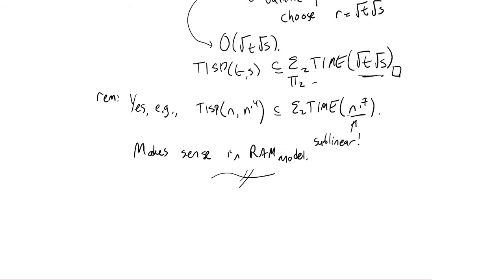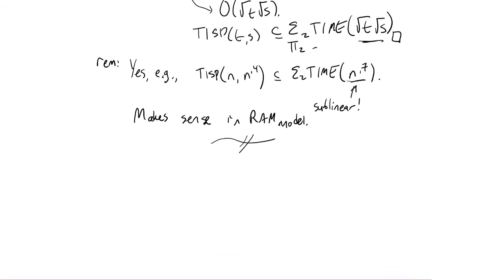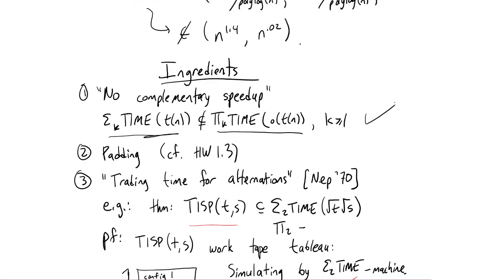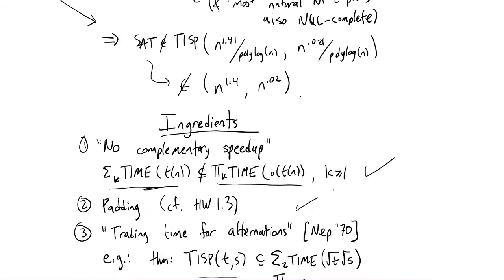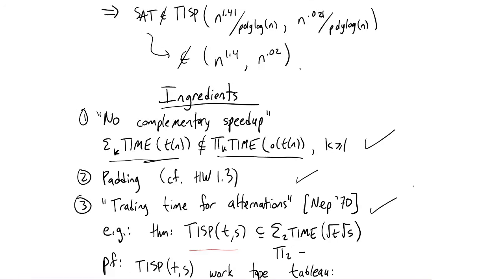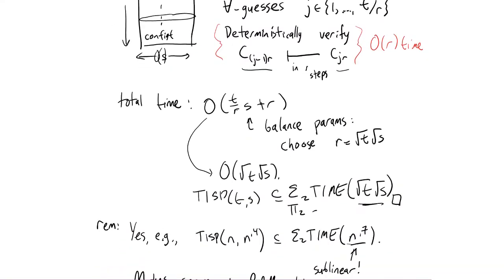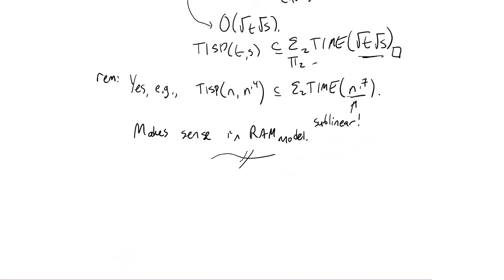With these ingredients in place — the no complementary speedup theorem, padding, and alternation trading — we can now prove theorems. Our proofs will be by contradiction: we'll assume non-deterministic linear time can be simulated in small time and space, do some padding and alternation trading, and derive a contradiction to the no complementary speedup theorem — getting an inclusion like Π_2 time n ⊆ Σ_2 time (less than n), which is false.